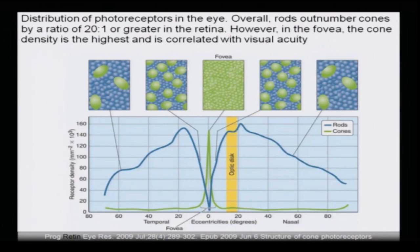This is how the rods and cones are distributed — the distribution of photoreceptors in the eye. Please again go through Progress in Retinal Eye Research, 2009. Overall, rods outnumber cones by a ratio of twenty to one or greater in the retina. However, in the fovea, the cone density is highest and is correlated with visual acuity. The fovea is rich in cones.